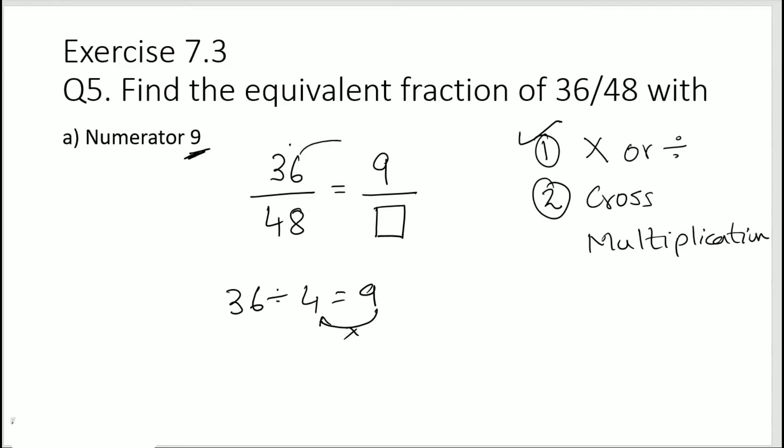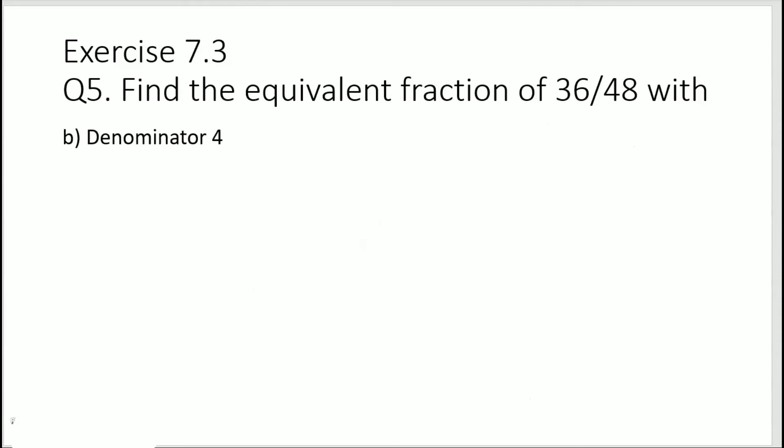So we need to do the same thing to the denominator: 48 divided by 4. 4 ones are 4, and 4 twos are 8. So that means my solution is 12. Okay, let's see the next one. Denominator is 4.